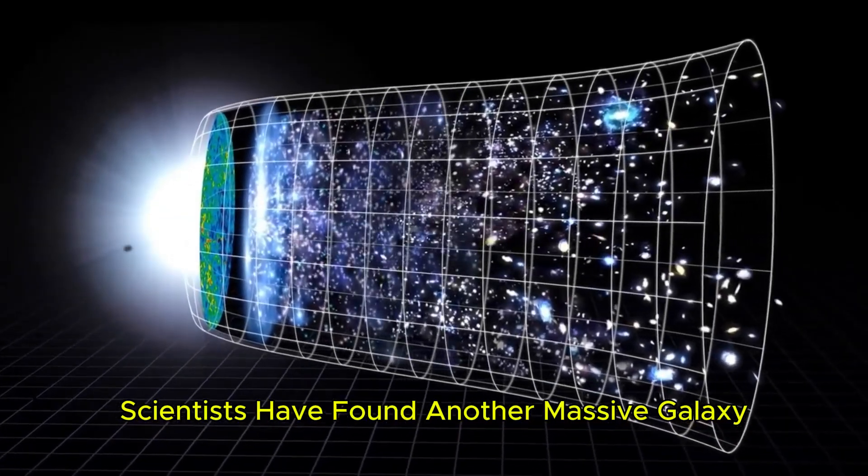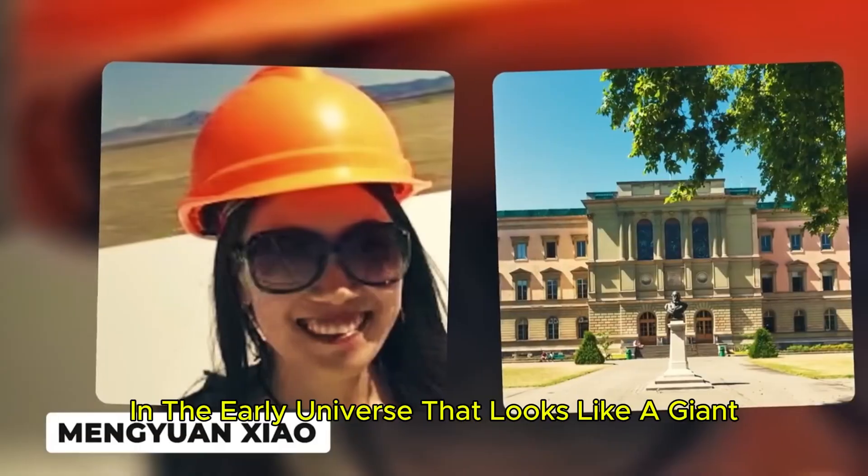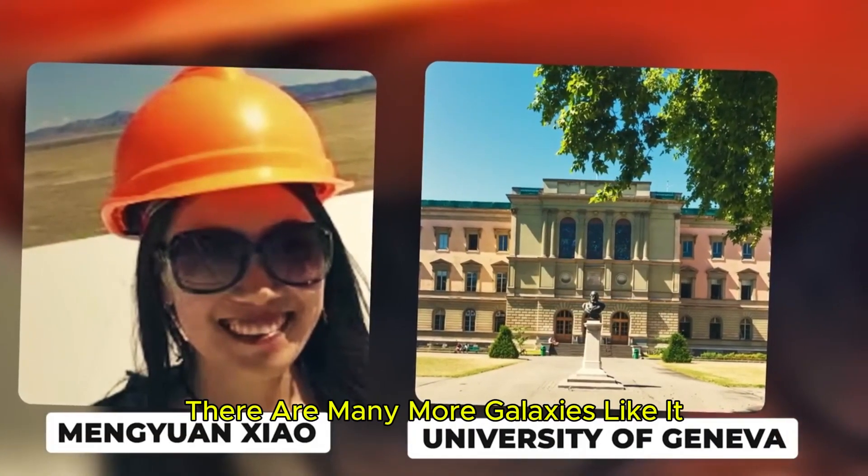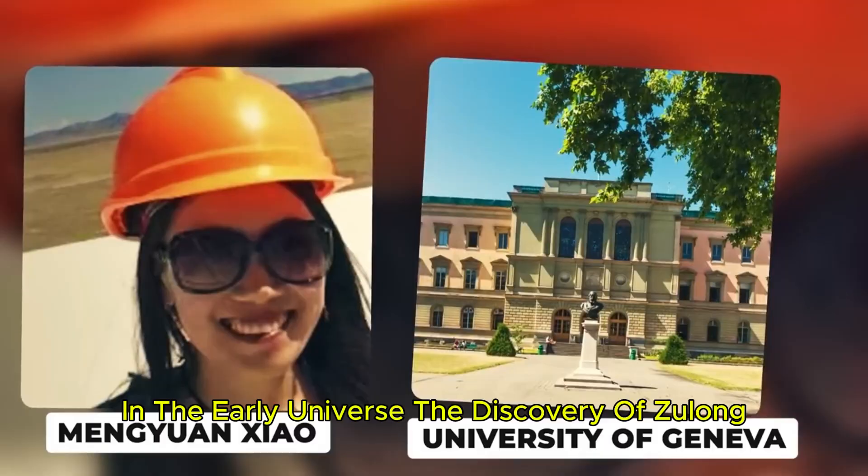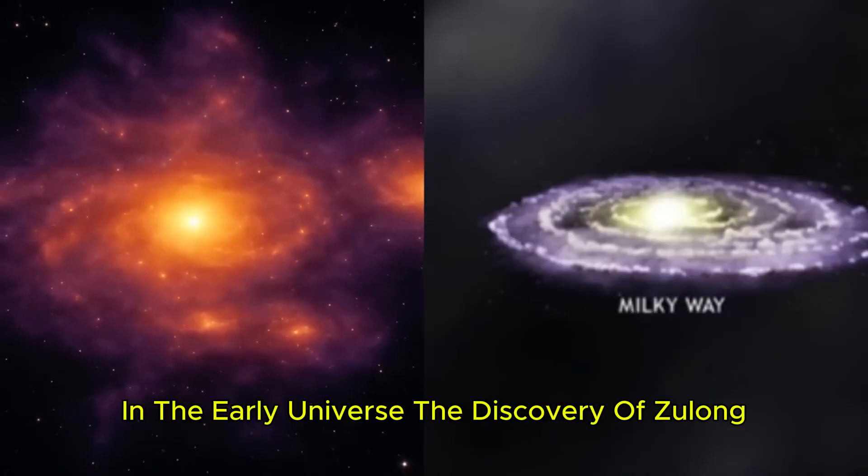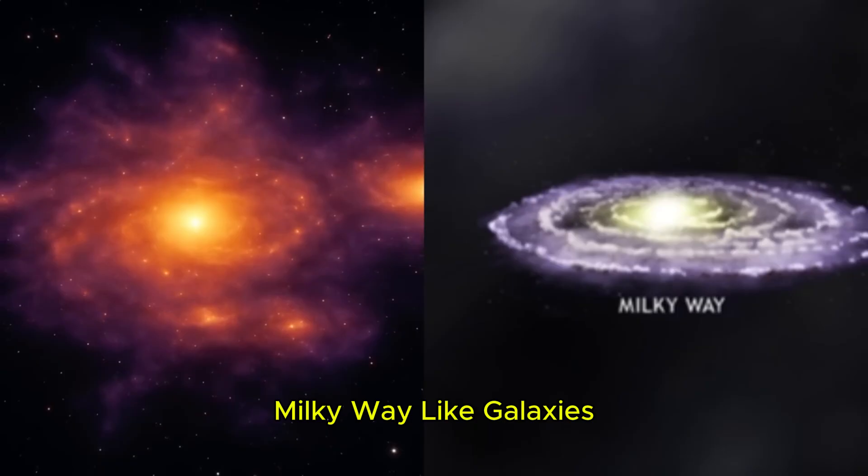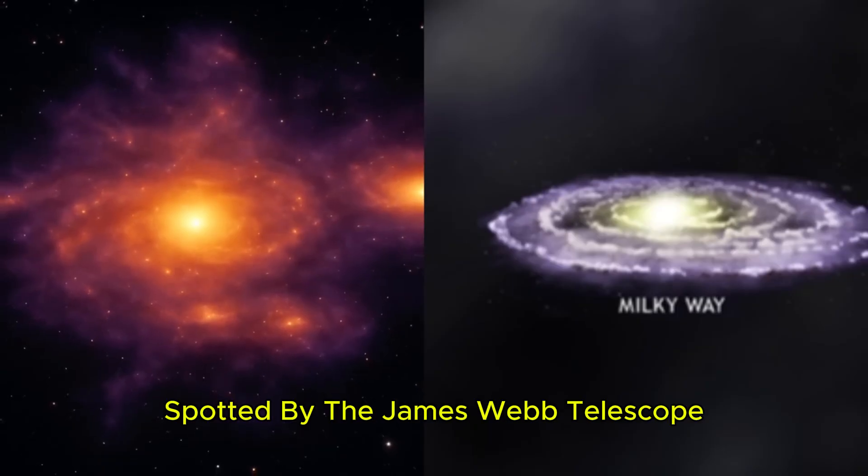And just recently, scientists have found another massive galaxy in the early universe that looks like a giant spiral version of our own galaxy. Webb data suggests there are many more galaxies like it in the early universe. The discovery of Zulong joins a growing list of well-formed Milky Way-like galaxies spotted by the James Webb Telescope in the early universe.